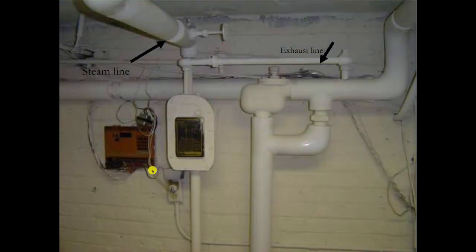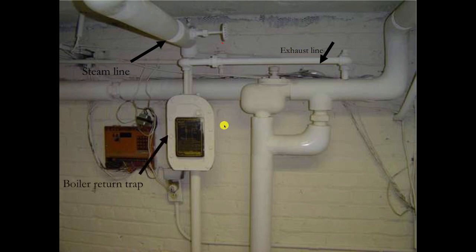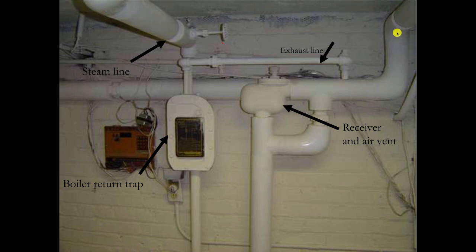This one was made by Hoffman. Over here we've got the return line coming back from the radiator. There's a steam line coming in here and an exhaust line coming over the top. This is the boiler return trap, and this is the receiver and air vent. This line goes out to the radiators — the steam line — and this line is coming back from the radiators. The condensate is coming out of radiators that have thermostatic steam traps on them. The condensate bypasses this line and goes back into the boiler. This exhaust line is equalizing the end of the dry return, coming back from the radiators, into the boiler return trap.